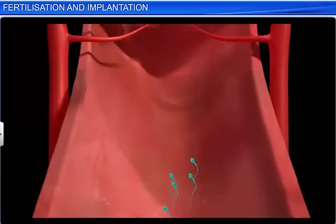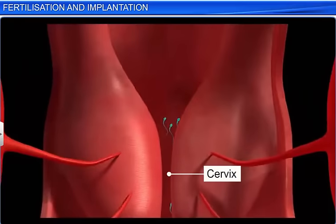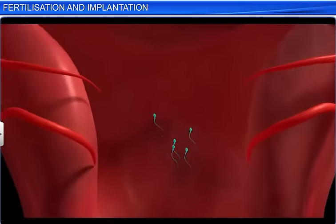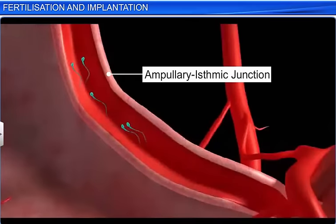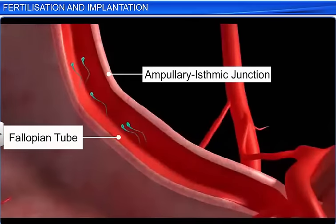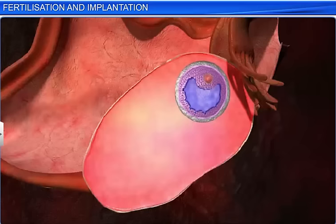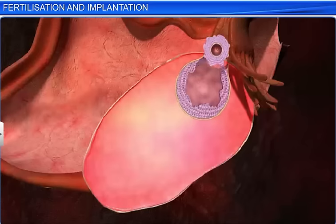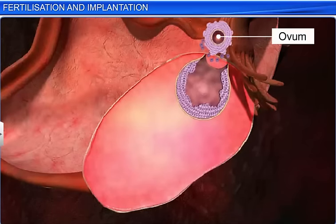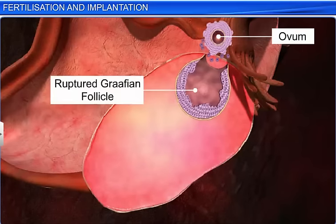These sperms then rapidly move through the cervix, pass through the uterus, and finally reach the ampullary isthmic junction of the fallopian tube. In the meantime, the ovum, after completing the first meiotic division, gets released into the fallopian tube with the rupture of the Graafian follicle.